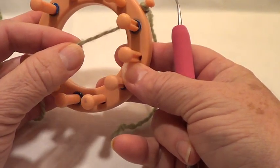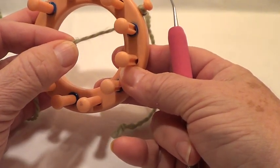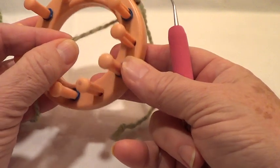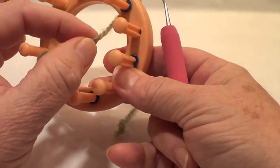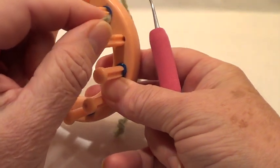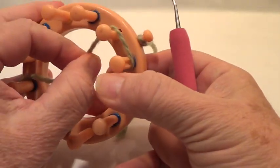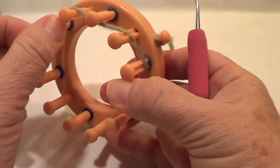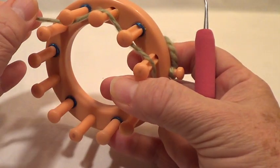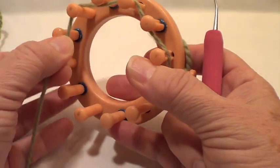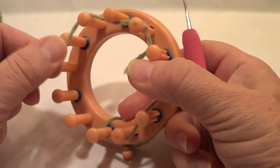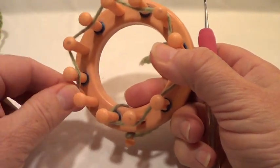Instead of between pegs 12 and 1, you're bringing the working yarn between pegs 11 and 12, then bring it over peg 1, behind 2, over 3, behind 4, and so on. Continue wrapping in the same manner around the loom.